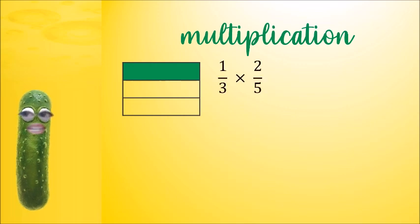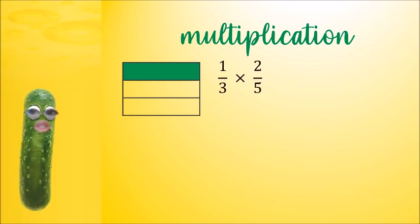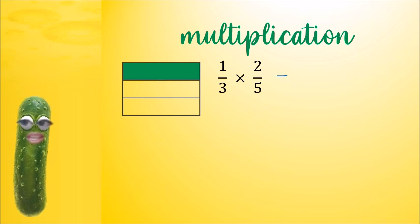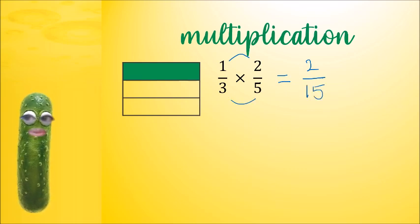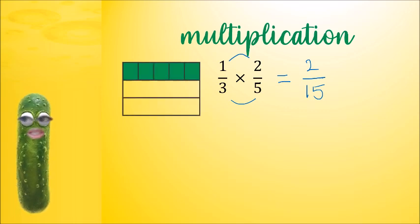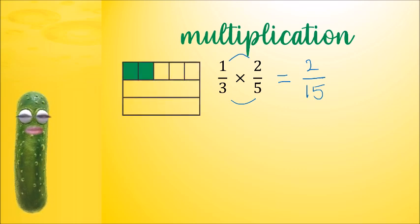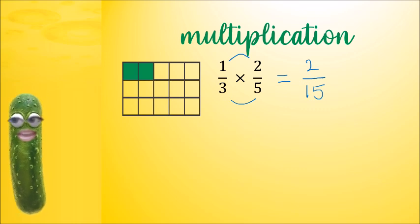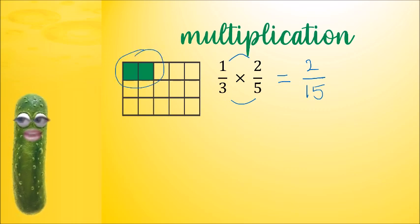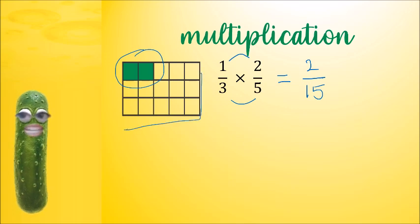Now let's have a look at a third times 2 fifths. Let's do our multiplication method and see if it works. So 1 times 2 is 2, and 3 times 5 is 15. Let's cut our third up into 2 fifths and see if we get the same answer. There's a third and I only want 2 fifths of that — chop into 5 pieces and only keep 2. Then make sure all the pieces are the same size. Now count: we have 2 out of 15. So we are correct.